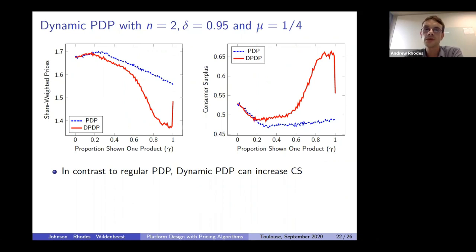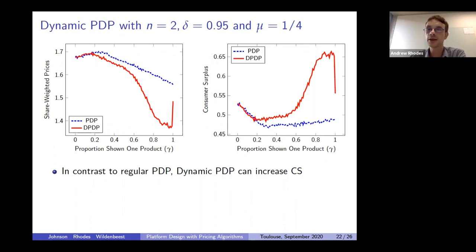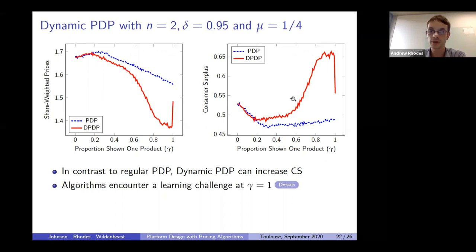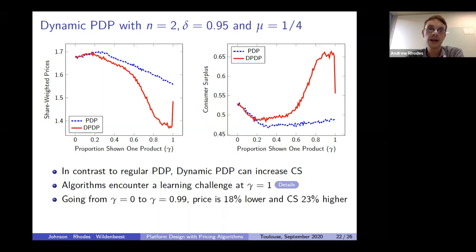Now let me look at the second intervention, dynamic price directed prominence. Again, the X axis shows the extent of platform intervention gamma, with prices and consumer surplus on the Y axis. The blue lines are results with PDP (copied from the previous slide), and the red line shows what happens when we implement dynamic price directed prominence. Very much consistent with theory, once gamma is above about 0.2, dynamic price directed prominence leads to much stronger price decreases and much stronger consumer surplus increases. One difference from theory is that prices don't fall all the way to marginal cost, but they do fall quite significantly.